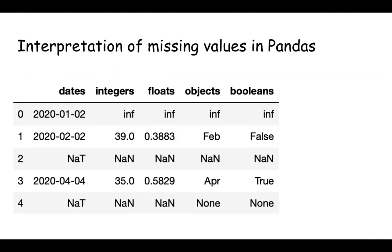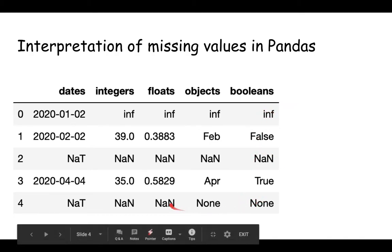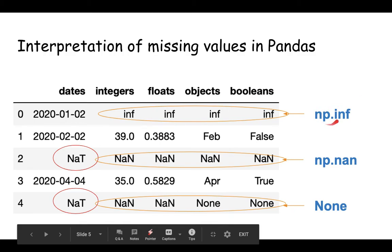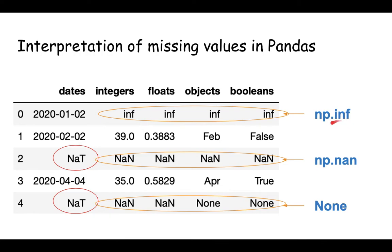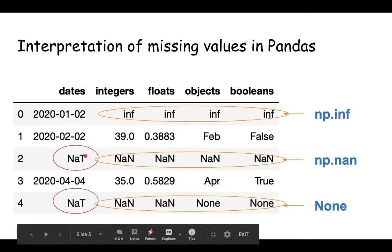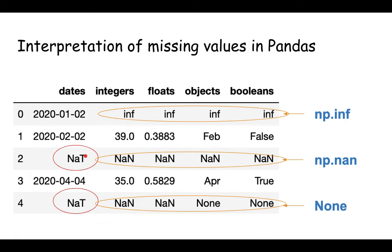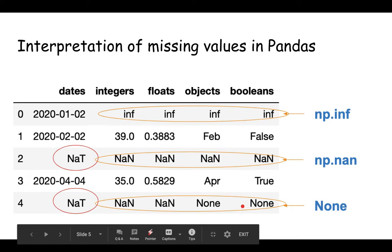And this is how pandas interprets the missing values. This is the table that I've created for different types of different data types. And here we can see that when we have infinity, we have basically infinity, we have NaNs, then there is None again NaNs, and NaTs. So to generate these values, I've used the np.inf - infinity could be plus or minus. Then for NaNs it's np.nan, and for None I just type None.